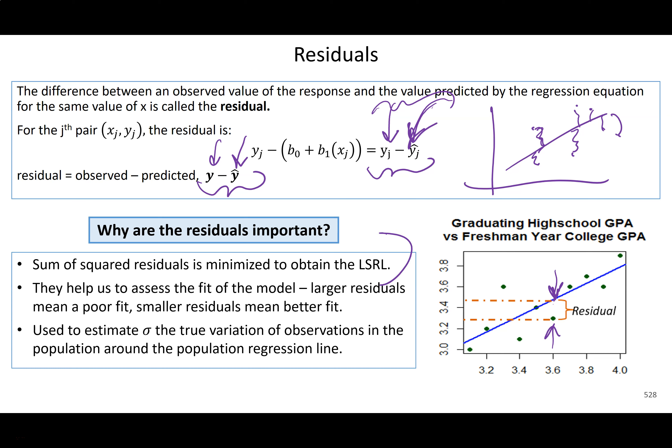We minimize these squared residuals in order to obtain the line. Residuals help us determine how well our model fits — how well does the line fit these data? They also help us estimate the standard deviation or variance of the true population line.